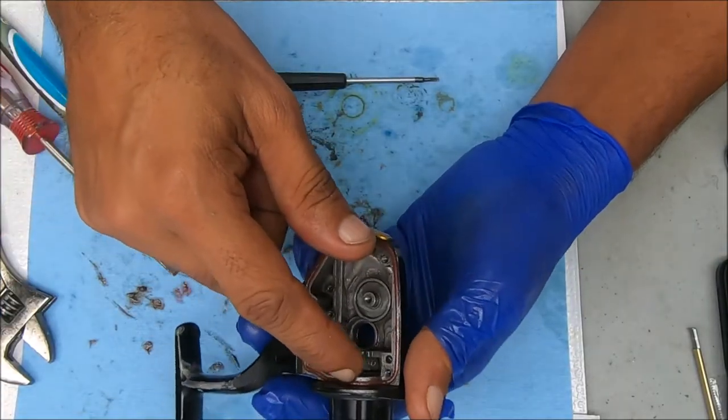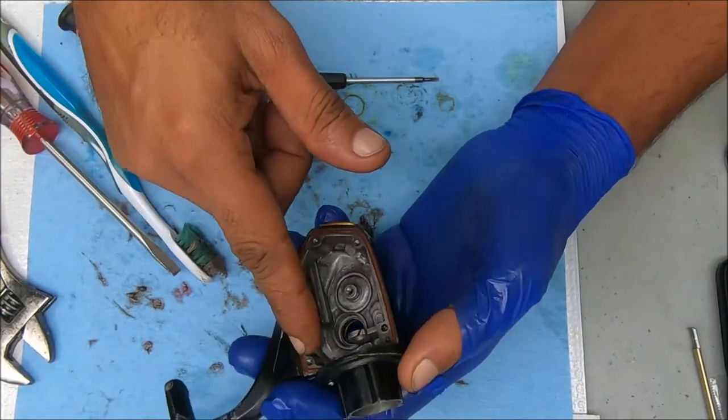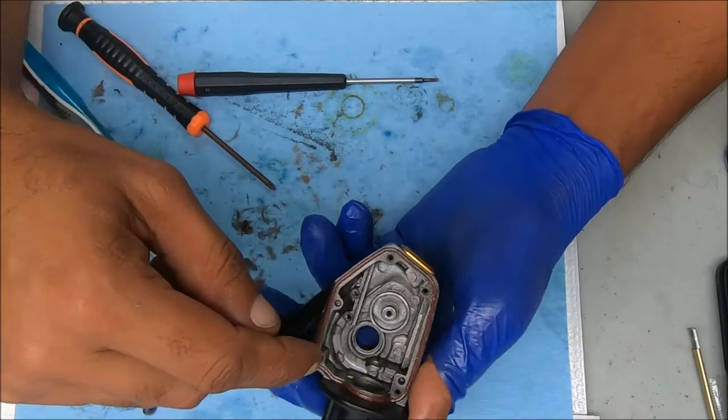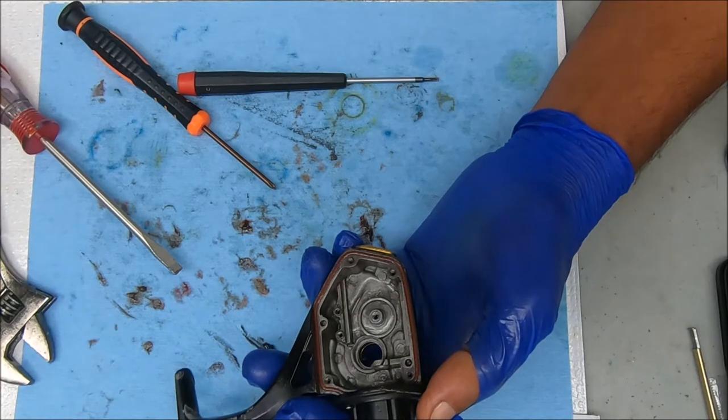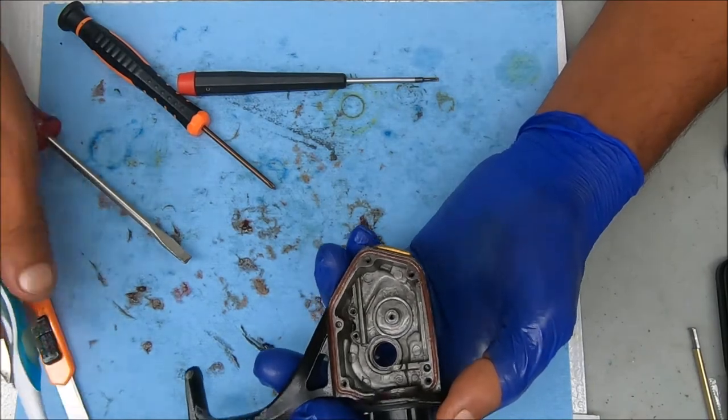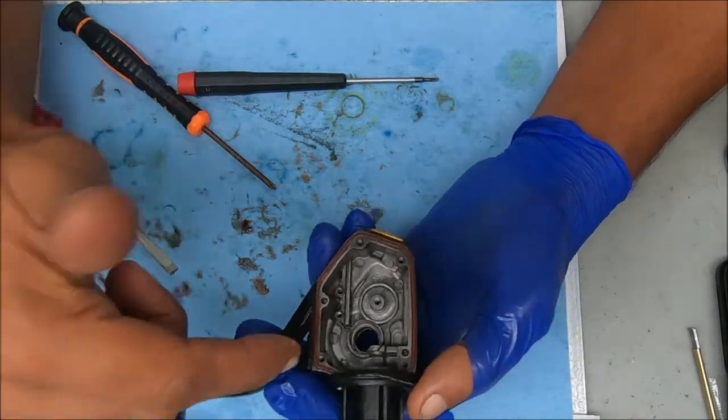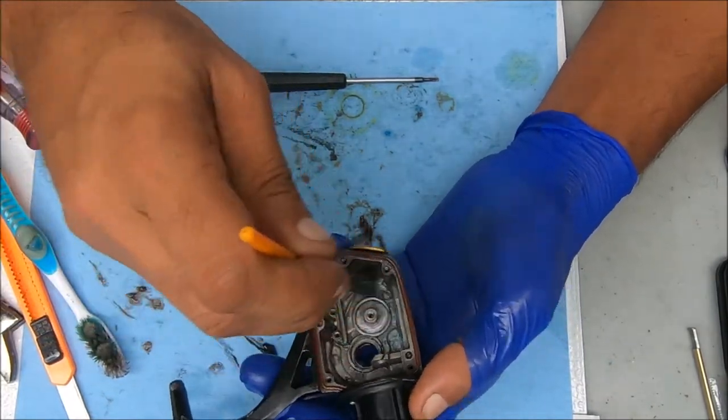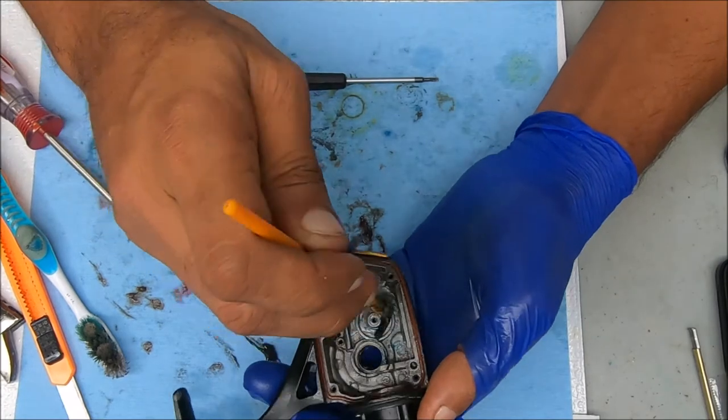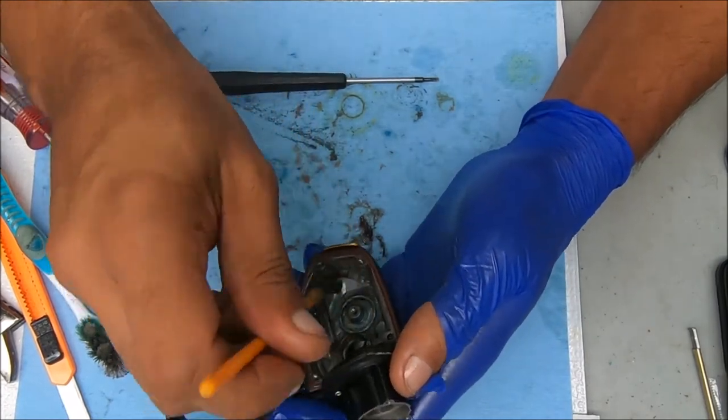Okay, so these reels have a seal around them that helps protect the water from going inside. But let's say you're fishing a lot in salt water or on the beach or wading in the water and there's a possibility you might dunk your reel. You can certainly grease inside here the entire casing with a light amount of grease.